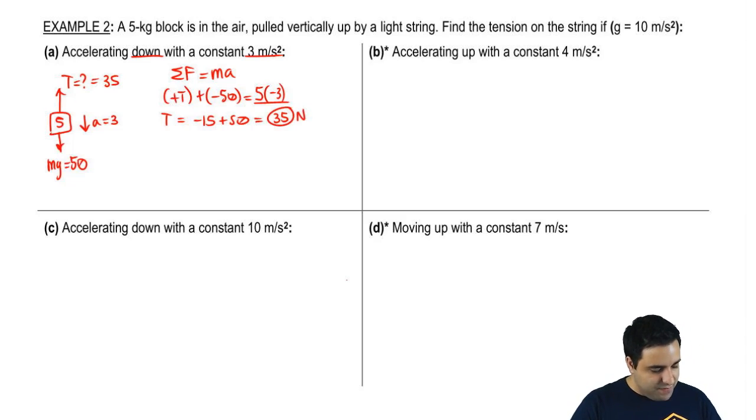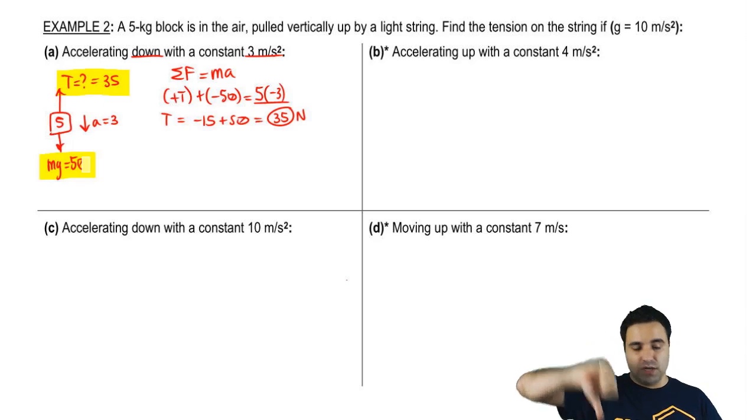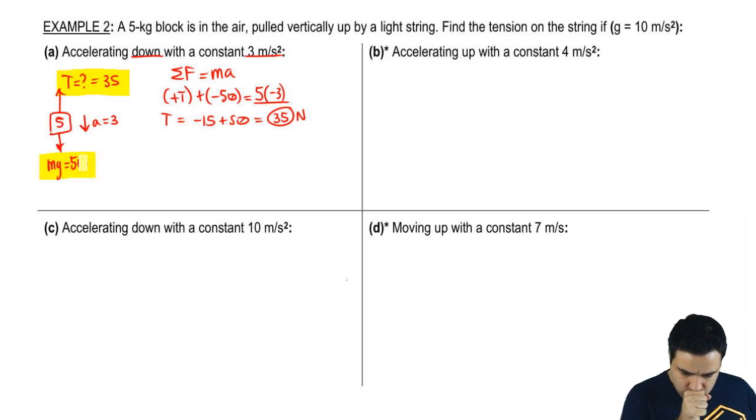And we can kind of look here and see if it makes sense. This force is smaller than this force. So if you think of this as a tug of war, mg wins because it's pulling harder down.